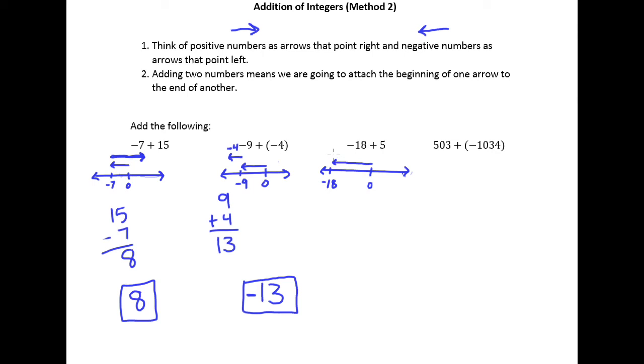We'll attach the beginning of five to the end of negative 18. But we know that five is a right pointing arrow, but it's a right pointing arrow that doesn't make it back too far, because the length of negative 18 is going to be a lot bigger than the length of five.